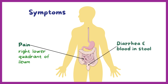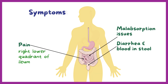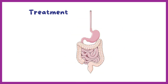Diarrhea and blood in the stool are also common symptoms. Patients may also have malabsorption issues, since the small intestines are critically important for absorbing nutrients. Treatment for Crohn's disease usually involves antibiotics, anti-inflammatory medications, and immunosuppressants.